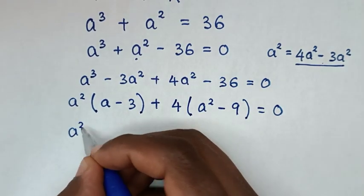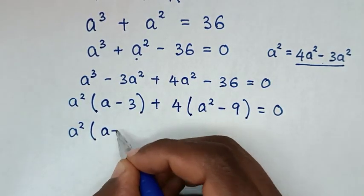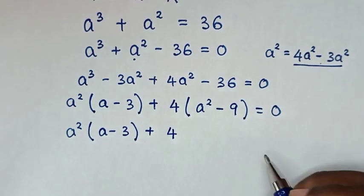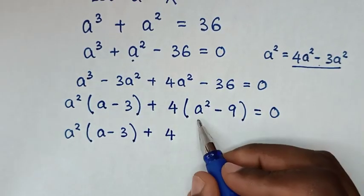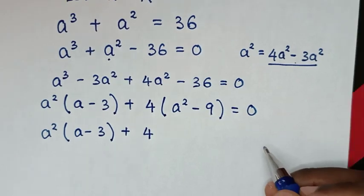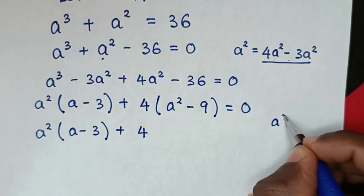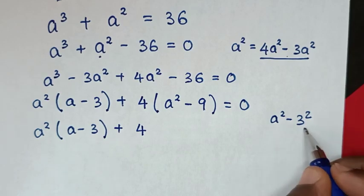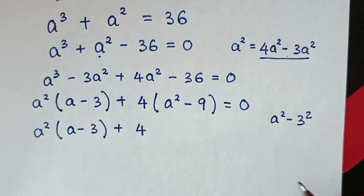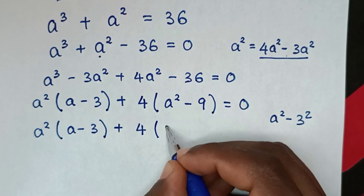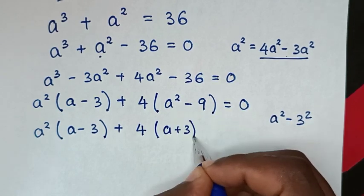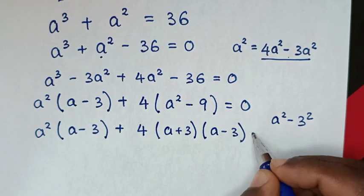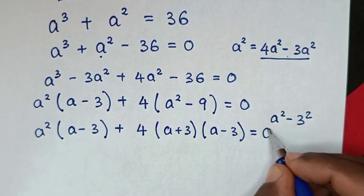It becomes a squared bracket (a minus 3) plus 4 bracket. From here, a squared minus 9 is the same as a squared minus 3 squared, which is in the form of a difference of squares. So it factors as bracket (a plus 3) bracket (a minus 3), equal to 0.